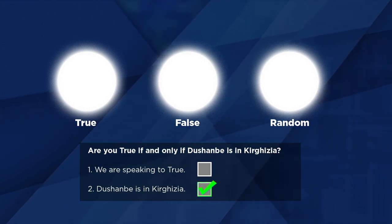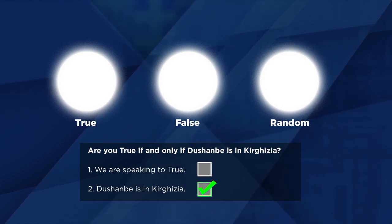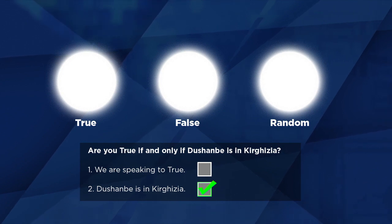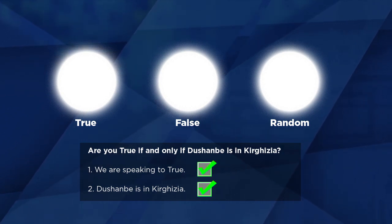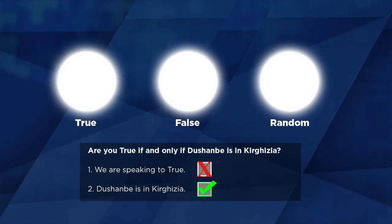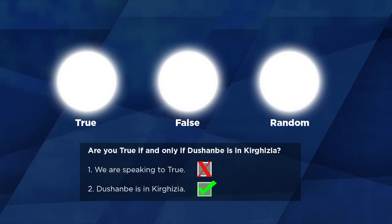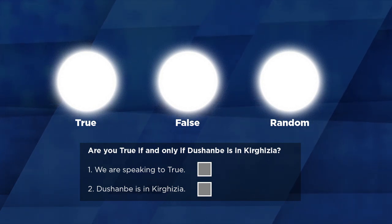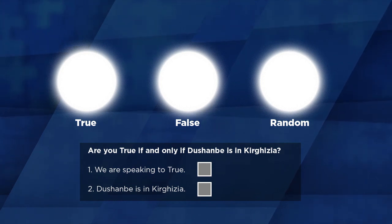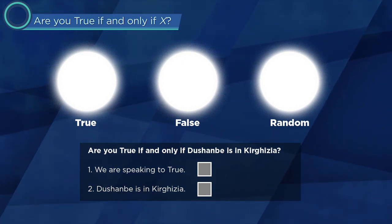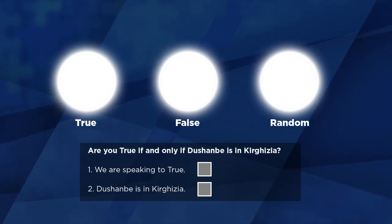But just for the sake of argument, suppose it were actually true that Dushanbe is in Kyrgyzia. In this case, item two would be true. This time, True would reason that both items are true, meaning the truthful answer is yes, and that's what he'll say. But if we're talking to False, he'll reason that item one is false, meaning the truthful answer is no, but then he'll lie and say yes. So regardless of whether we're speaking to True or to False, the answer will be yes.